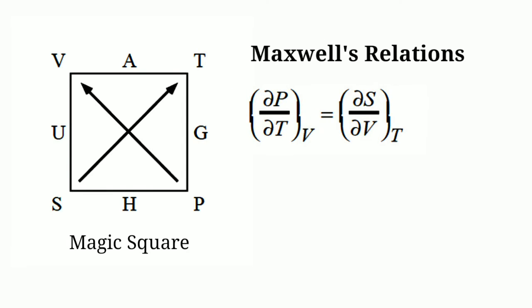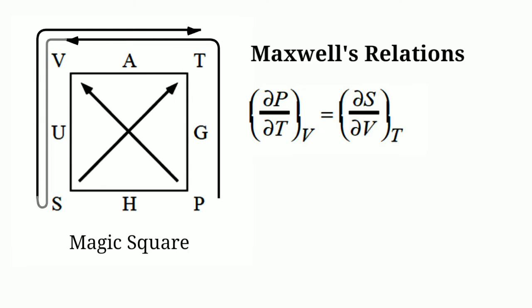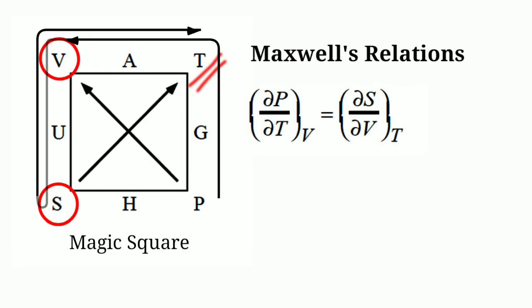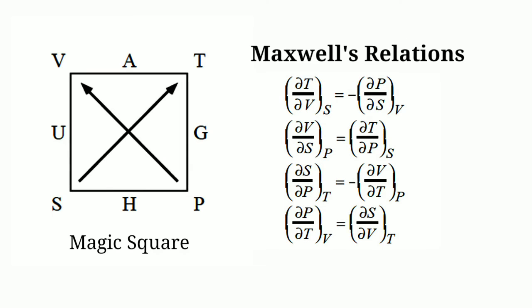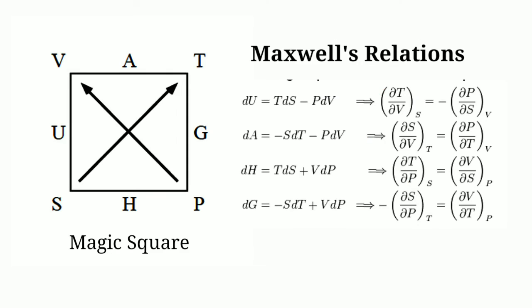Now let us find out Maxwell's fourth relationship. Partial derivative of P with respect to T at constant V equals partial derivative of S with respect to V at constant T. Since both S and P are at the arrow tail, both sides of this equation should have been minus, but since the two minus signs cancel one another we get this relationship. In this way we can find out all four Maxwell's relationships. This is the easiest trick to remember or to find out the Maxwell's relationships.